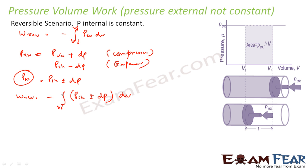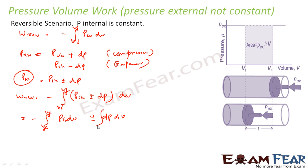Substituting, W_reversible = −∫(P_internal ± dP)·dV from V_i to V_f. Expanding this, we get −∫P_internal·dV ± ∫dP·dV, both from V_i to V_f. But the second term dP·dV is extremely small — both dP and dV are very very small — so we can neglect that part. It is almost zero.